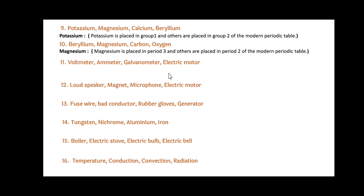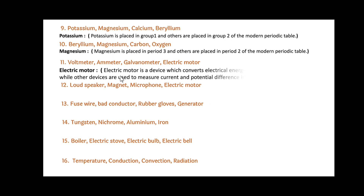Next: Voltmeter, Ammeter, Galvanometer and Electric Motor. Out of this, Electric Motor is the odd one out. Since Electric Motor is a device which converts electrical energy into mechanical energy, while other devices are used to measure current and potential difference in a circuit.